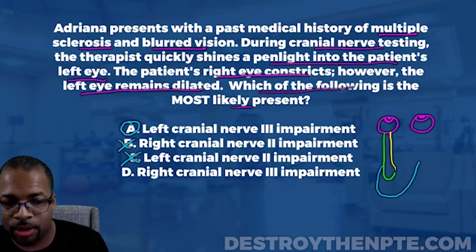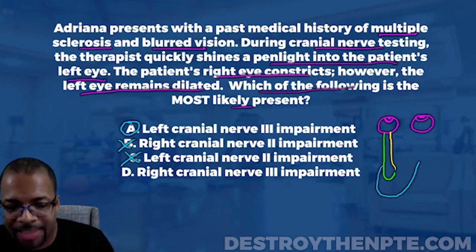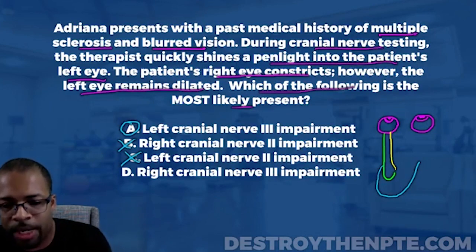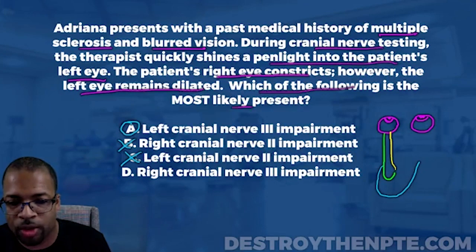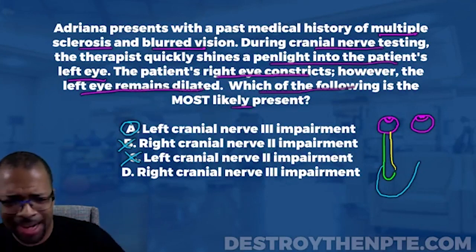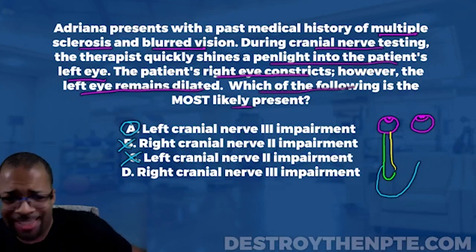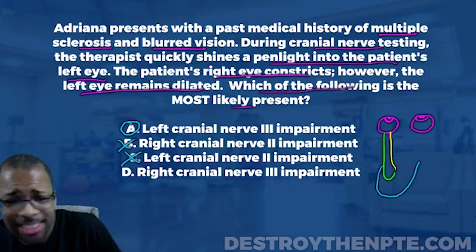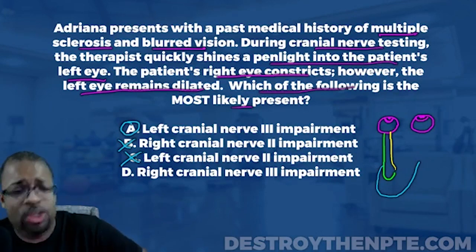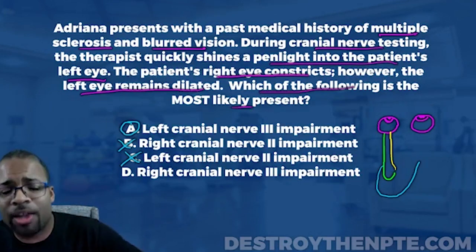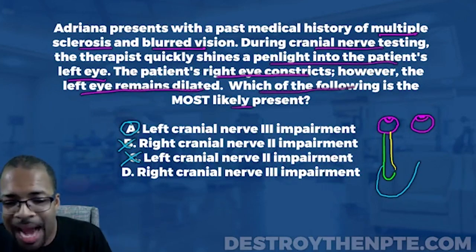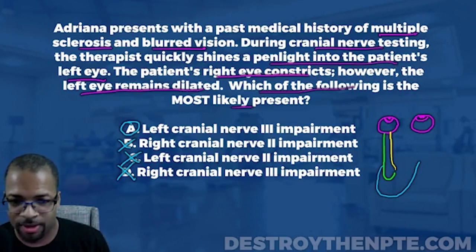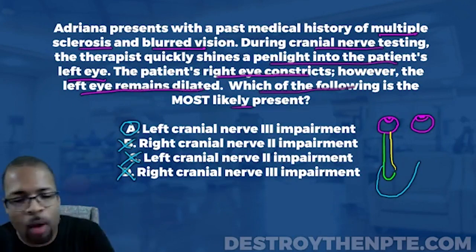Answer D says right cranial nerve 3 impairment — the right oculomotor nerve. But are we worried about the right side? Is the right side showing us the issues? No. The problem is on the left side, so D cannot be the right answer.